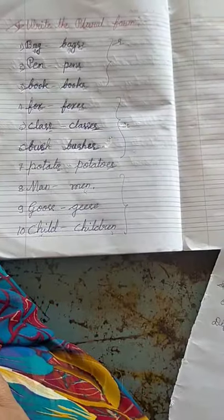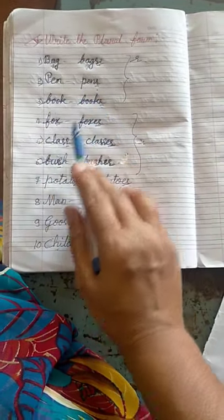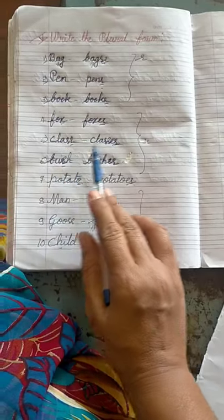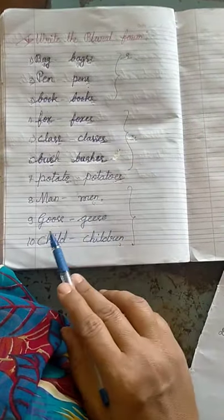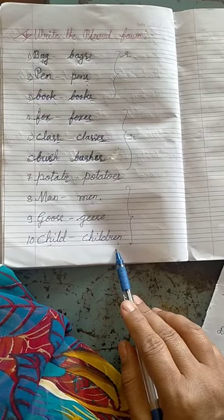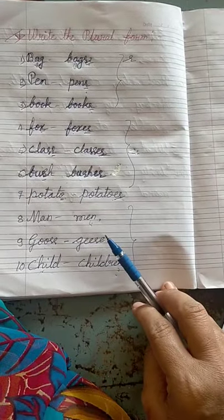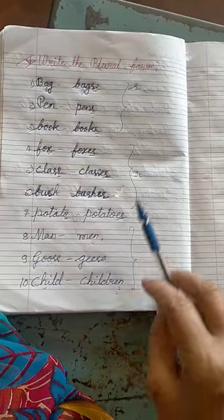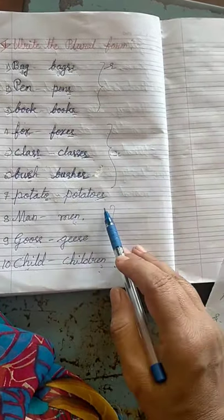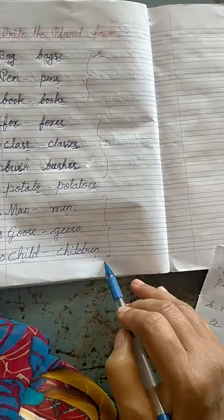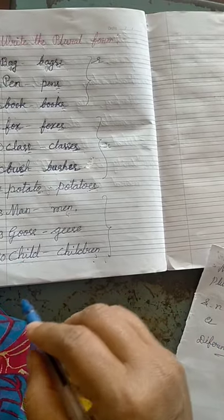Let us review all plurals: bag - bags, pen - pens, book - books, fox - foxes, class - classes, bush - bushes, potato - potatoes, man - men, goose - geese, child - children, tooth - teeth, mouse - mice. You must learn and understand all of these.